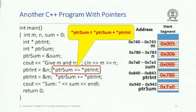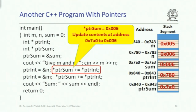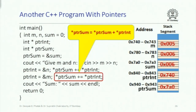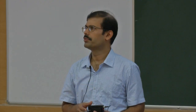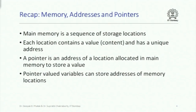Here is another program: there is an integer variable called sum, its address is stored in pointer_sum, then pointer_int stores the address of n and then m. The statement star pointer_sum plus equals star pointer_int accesses star pointer_sum which is 0 and star pointer_int which is the value of n, adds them, and stores back at pointer_sum. The next iteration uses m, so the values of m and n are added and printed.